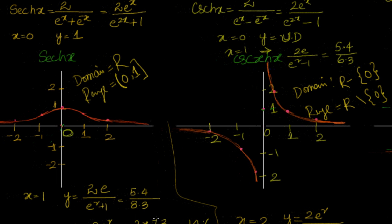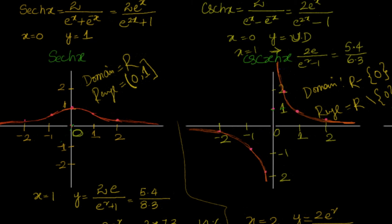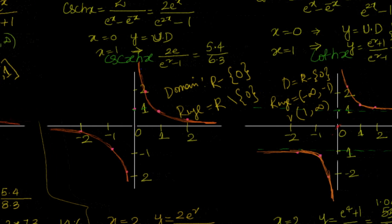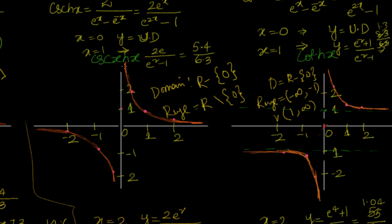One more interesting thing: can these functions have inverse functions? For sech(x), the graph is symmetric about the y-axis, so it is not directly invertible. But if we restrict the domain to [0, infinity), then we can make it invertible and define an inverse function.